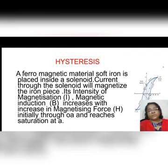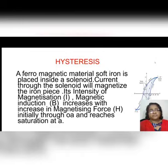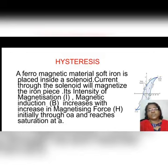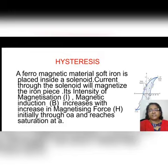Ferromagnetic materials can be used for making magnets, and their behavior in an external field — according to the direction and magnitude of the external magnetizing field — can be understood by the hysteresis curve. It is a graph between the intensity of magnetization and the magnetic intensity.